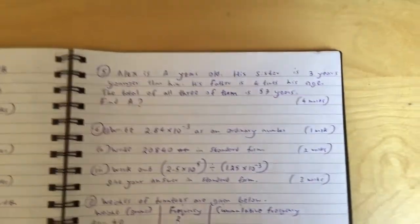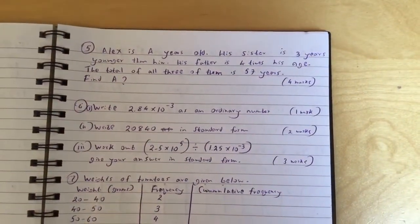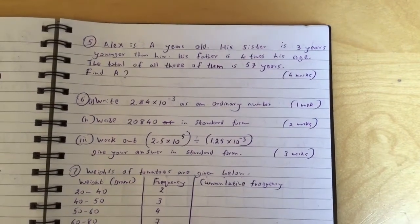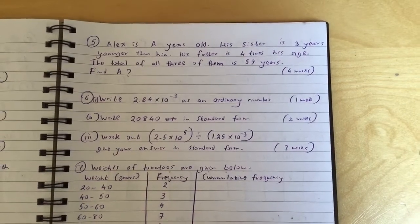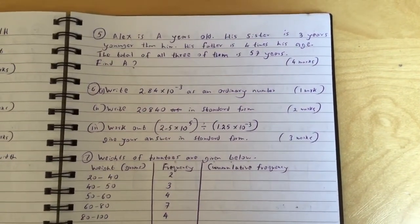Question 5: Alex is a years old. His sister is three years younger than him. His father is four times his age. The total of all three of them is 57 years. Find a.